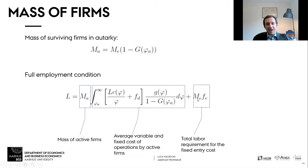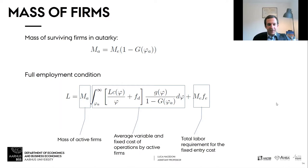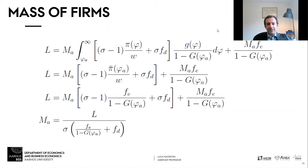Solving this equation, you see that the mass of entrants equals the number of workers L divided by a function of the two fixed costs. This makes sense: a larger economy with more workers will have more firms, as in the Krugman model. And if the fixed costs are higher, you'll have fewer firms, conditional on the cutoff.